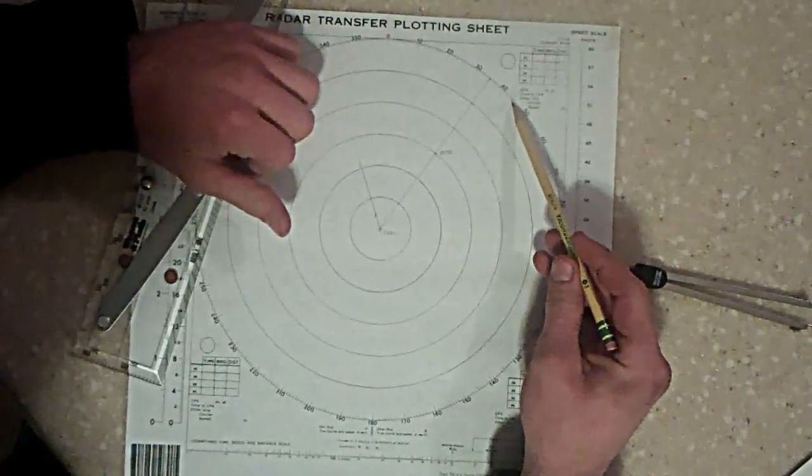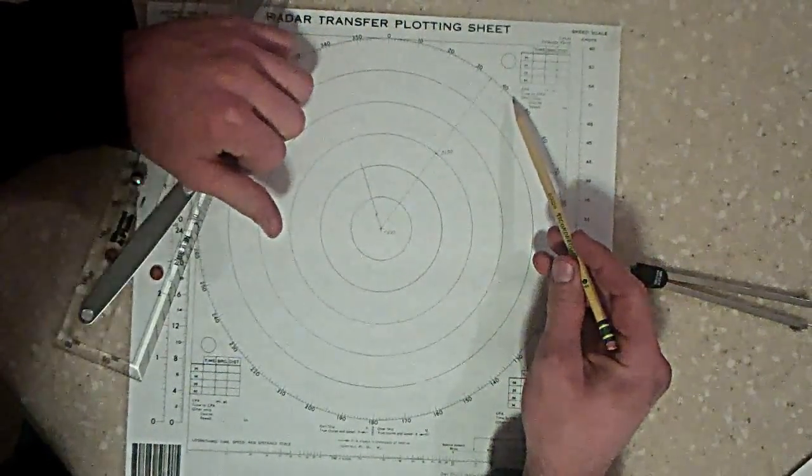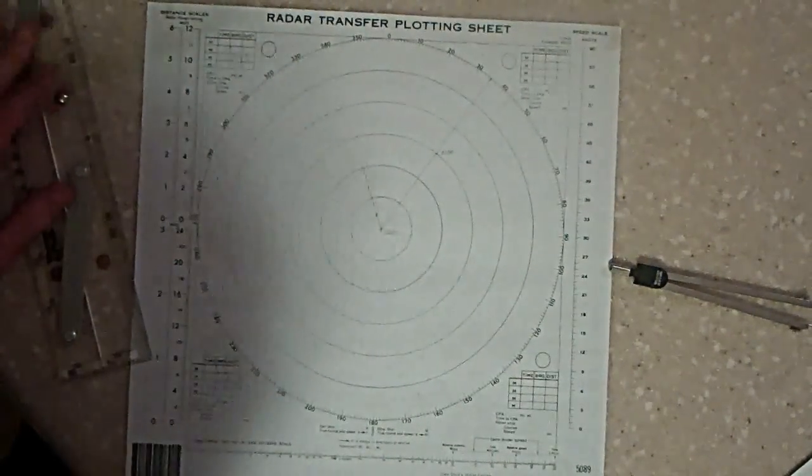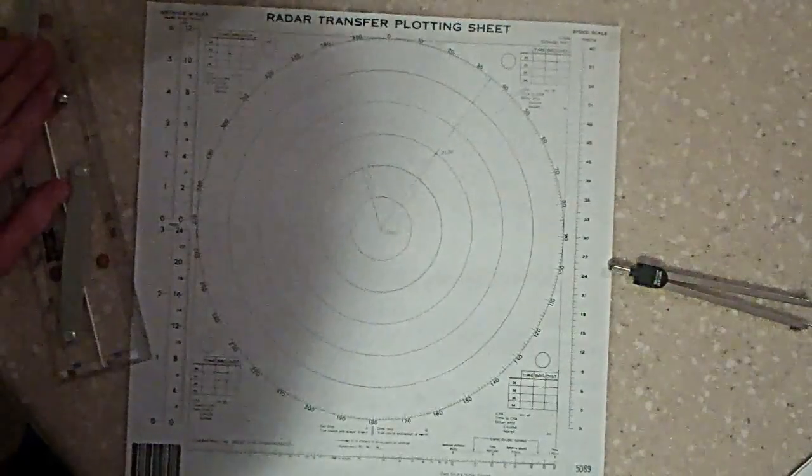As you can see, it passes directly through 044 degrees true, which is the answer to the question. What course should you steer? 044 degrees.